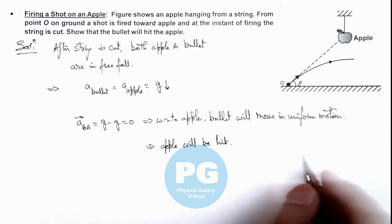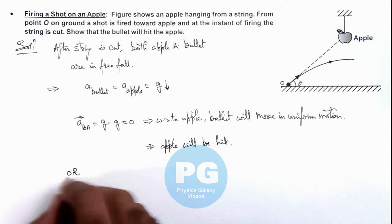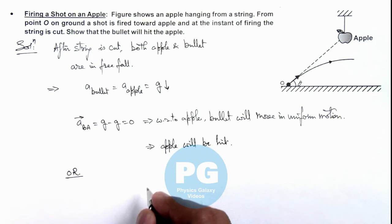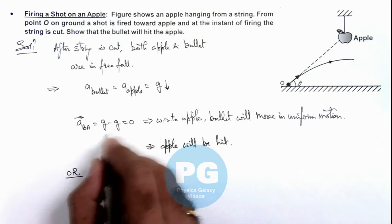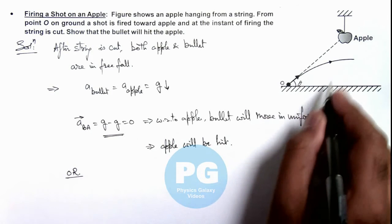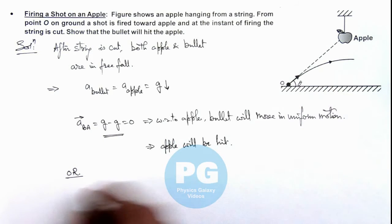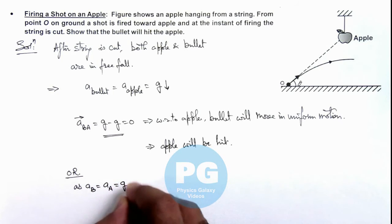And we can also write the solution in an alternative way. As both are accelerating with acceleration g in downward direction, we can write acceleration of bullet equals acceleration of apple equals g in downward direction.